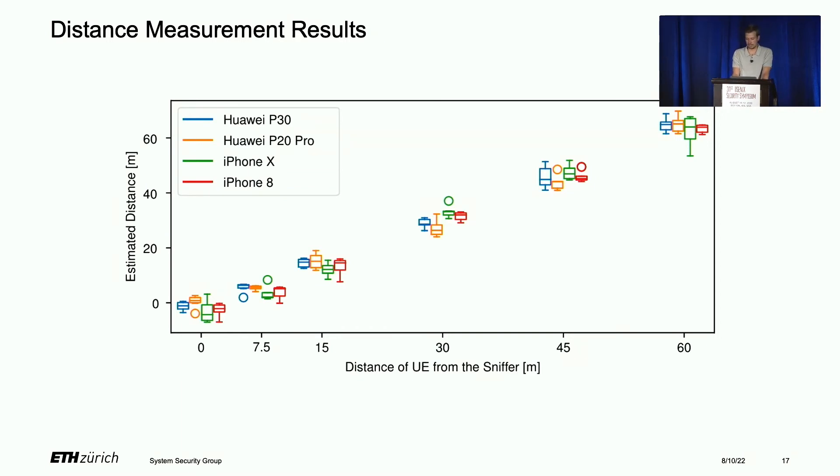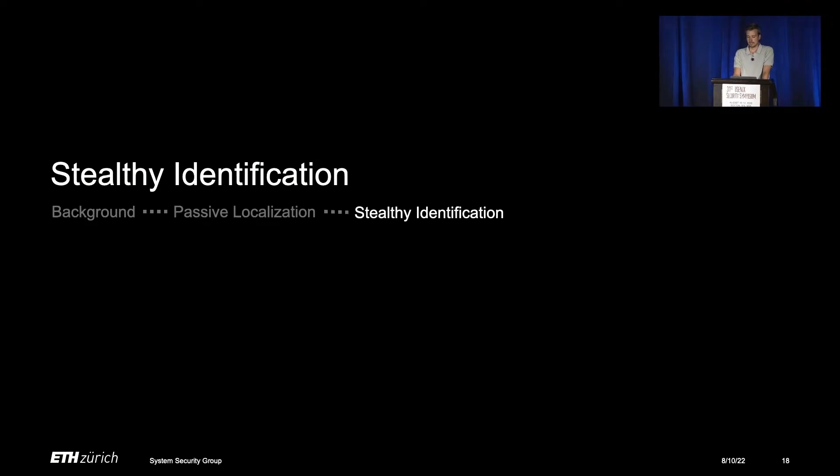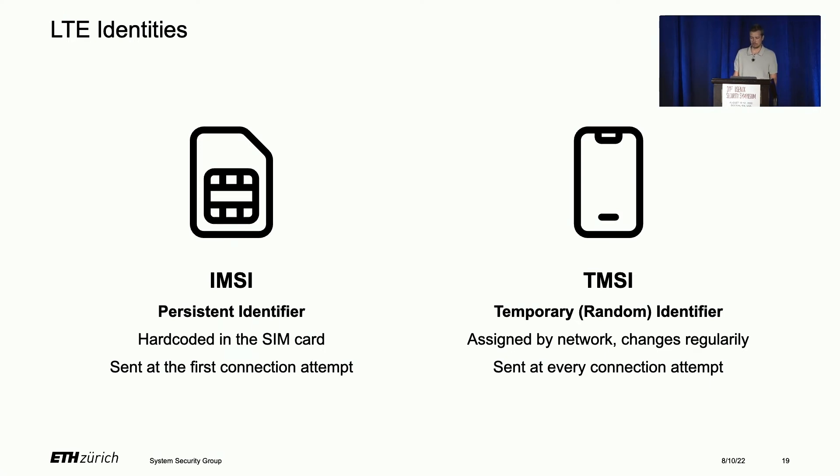We showed how we can do passive localization. What about stealthy identification? All users in LTE have two identifiers. One is IMSI, a persistent identifier hard-coded inside the SIM card, which is never sent in plaintext - only the very first time the user connects to the network. Otherwise, the phone always uses TMSI, a temporary identifier assigned by the network that changes regularly and is sent at every connection attempt. As I said at the beginning, for tracking we need both localization and identity. We can use TMSI for identification, but when the TMSI changes, we wouldn't be able to match these two TMSIs together as one person. Therefore, we need to find a way to get the IMSI out of the phone.